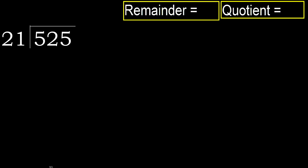525 divided by 21. 5 is less, therefore next. 52 is not less, therefore we work with 52. 21 multiplied by which number is nearest to 52, but not greater?